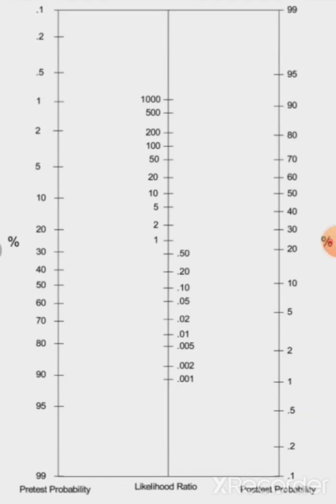This is a nomogram. What it does, it helps you see how your pre-test probability and likelihood ratios change your post-test probability.